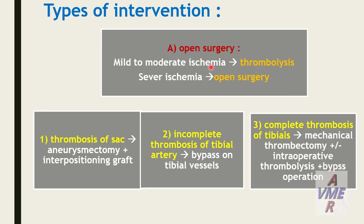Types of intervention. Open surgery for mild-to-moderate ischemia; thrombolysis for severe ischemia followed by open surgery. When we have thrombosis with aneurysectomy, address outflow thrombosis in graft. When we have incomplete thrombosis of the tibial artery, perform bypass to the best tibial vessel. With complete thrombosis of the tibial vessels, we can do mechanical thrombectomy, intraoperative thrombolysis, then bypass to the best vessel.